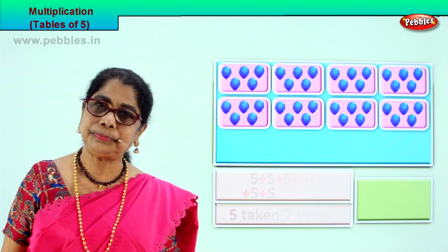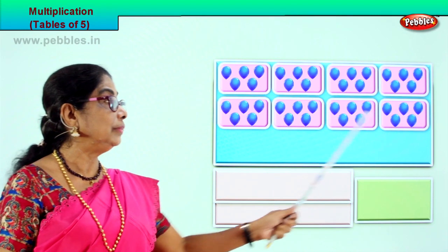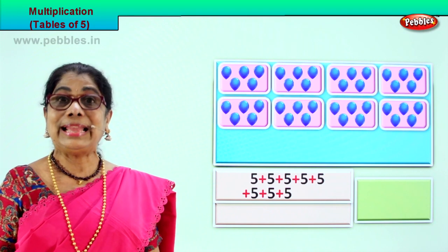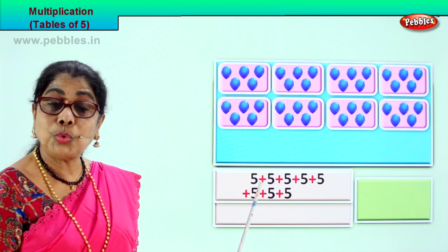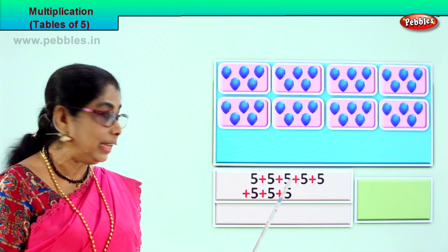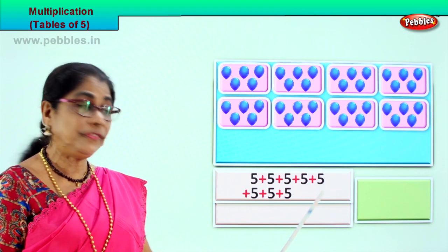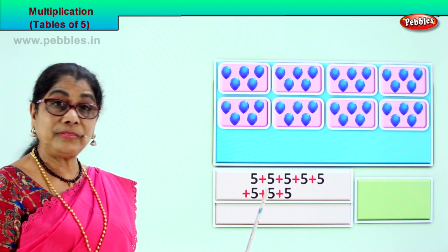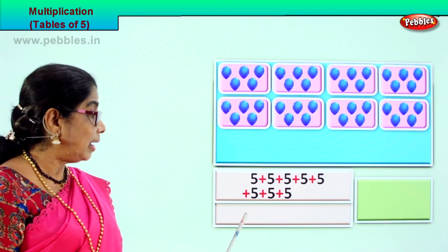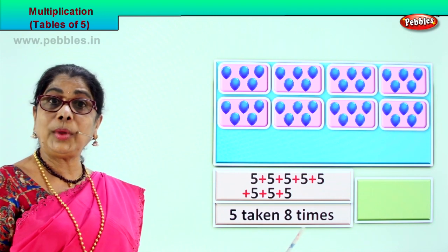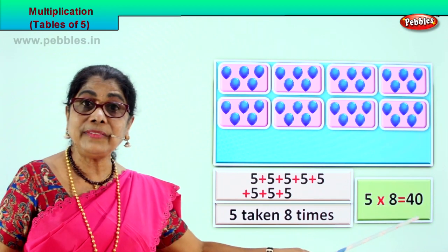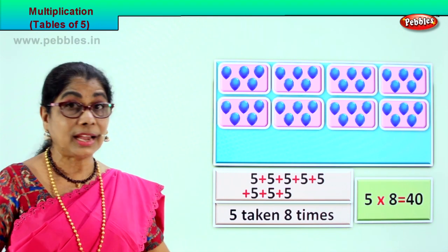Let's look at another grouping of five. One, two, three, four, five, six, seven, eight. How many times is five taken? Eight times. Multiplication is repeated addition, so we add five eight times. Five plus five is ten, plus five is fifteen, plus five is twenty, plus five is twenty-five, plus five is thirty, plus five is thirty-five, plus five is forty. Five into eight is equal to forty. Five eights are forty. Good.